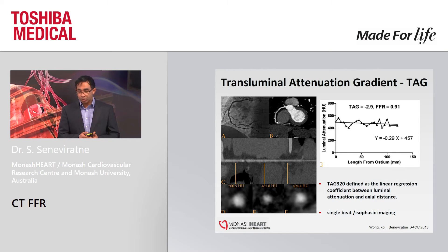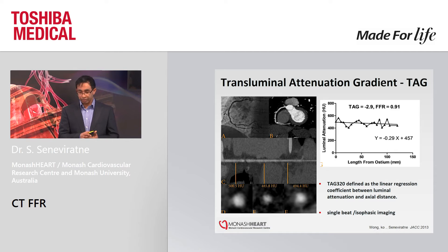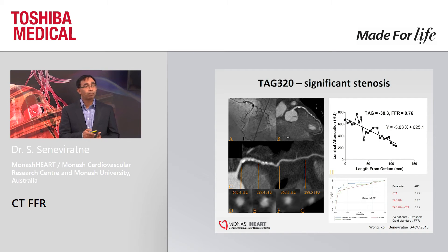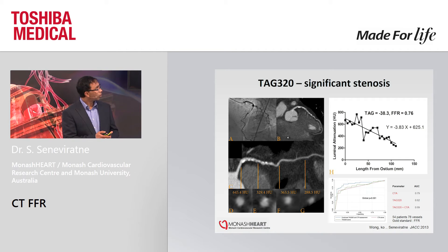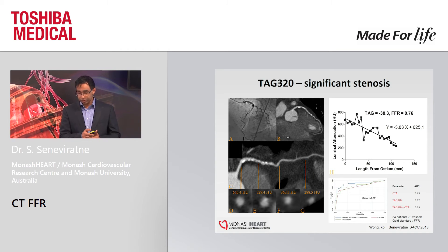The second technique is the transluminal attenuation gradient, or TAG, which is a relatively simple concept — pretty much looking at the drop of Hounsfield unit along the coronary artery. If there is no significant stenosis, the drop in Hounsfield unit along the artery will be pretty small, giving a relatively flat gradient. On the other hand, if you have a significant stenosis, you would expect the Hounsfield unit to drop immediately after the stenosis. However, it is not clinically used at the moment because the technique is very much dependent on the contrast density in the aortic root and the proximal ascending aorta.